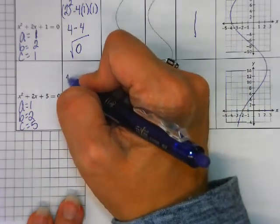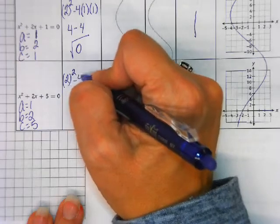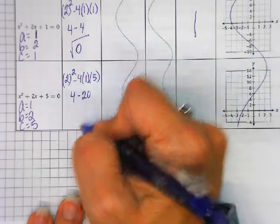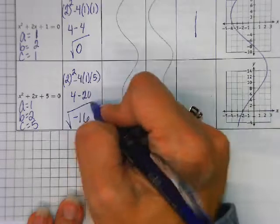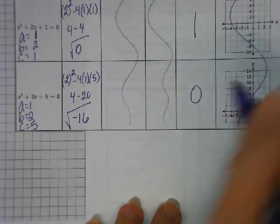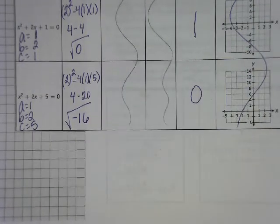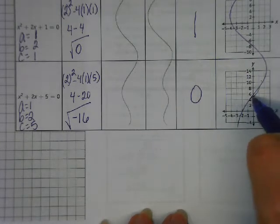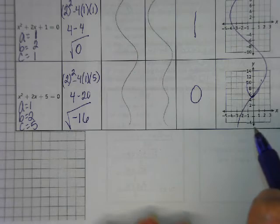So when we plug this in, 2 squared minus 4 times 1 times 5. So I get 4 minus 20. Well, that's negative 16. Can I take the square root of a negative? No. Zero solution. When we graph this, here's our y-intercept. It's going to be like this. It's not going to touch the x-axis.